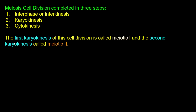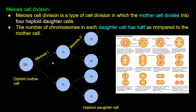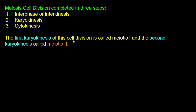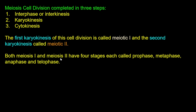The nucleus is divided in two steps. The first karyokinesis is called meiotic first — the nucleus divides for the first time. The second karyokinesis is called meiotic second — the nucleus divides for the second time. Both meiosis first and meiosis second have four stages.